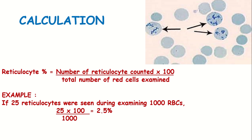For example, if we count 25 reticulocytes out of 1000 RBCs: 25 into 100 divided by 1000 equals 2.5% reticulocyte count.